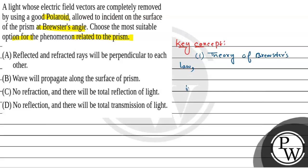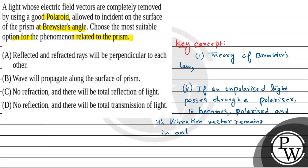So, this is our concept or key concept: if an unpolarized light passes through a polarizer, it becomes polarized and its vibration vector